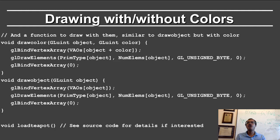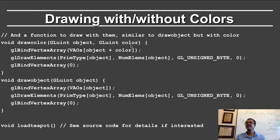The standard drawObject command binds the vertex array for the object and draws elements using the primitive type, number of elements, and unsigned bytes, then unbinds. For drawing with color, I simply use object plus color, where object is the cube and color is the pillar number: 0 for red, 1 for green, 2 for blue, 3 for yellow. Apart from the binding index, it works exactly the same as the standard drawObject command.